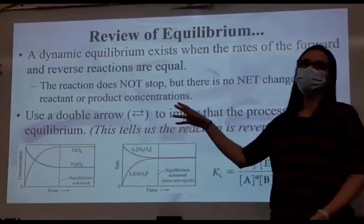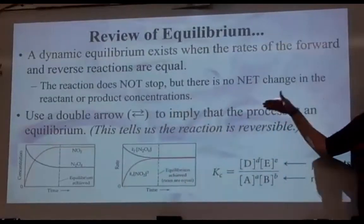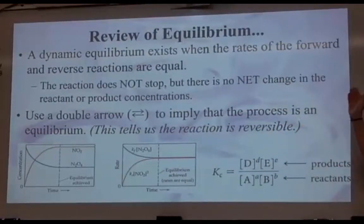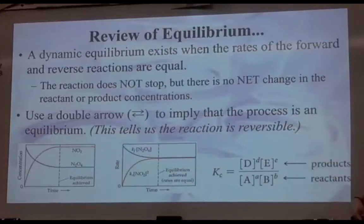We use this double arrow. When you see a double arrow, that tells us that you're at equilibrium, and it tells us that the reaction is reversible. Forward goes reactants to products, reverse goes products to reactants. That's what it means to be reversible.